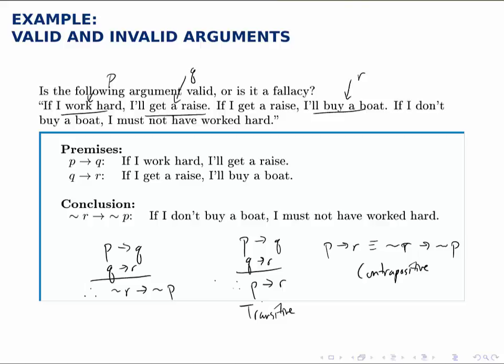So by using transitive reasoning and then noting that the conclusion we come up with is equivalent to its contrapositive which is the one we have, we can tell that this argument is a valid one because transitive reasoning is valid and the contrapositive is equivalent. So this conclusion is a valid conclusion to draw.